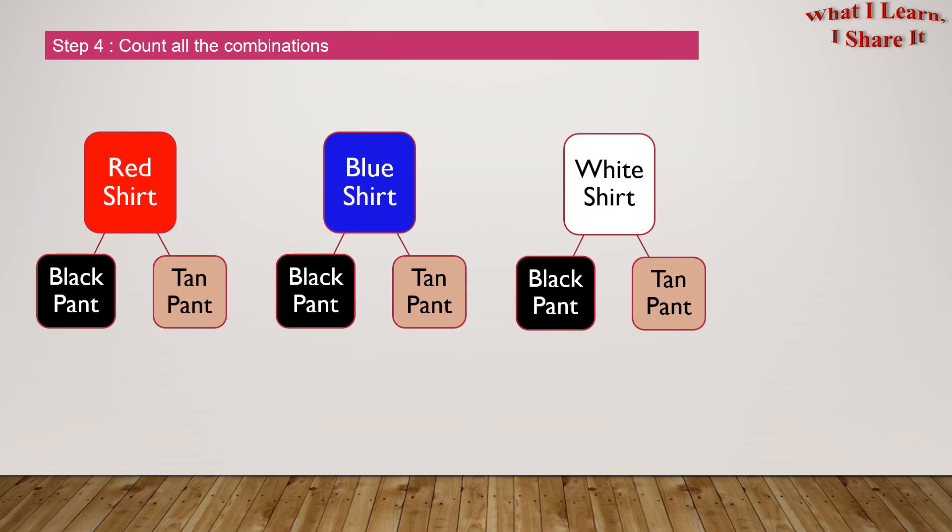Step 4: Count all the combinations. So the red shirt with the black pant, one. The blue shirt goes with the black pant, two. The blue shirt with the tan pant, three. The blue shirt with the tan pant, four. The white shirt with the black pant, five. The white shirt with the tan pant, six. There are six combinations. Yay! We solved the problem!